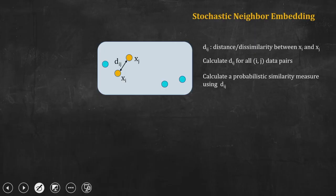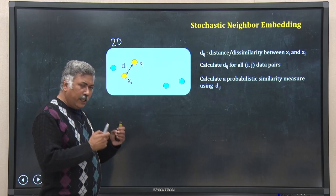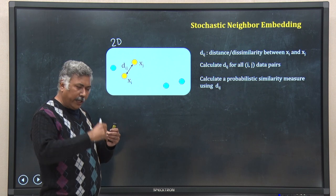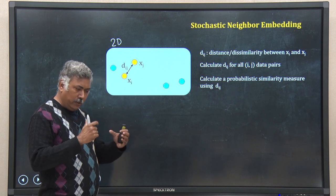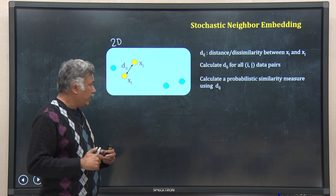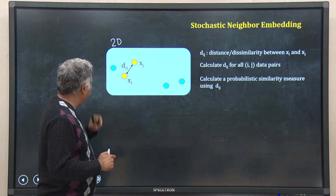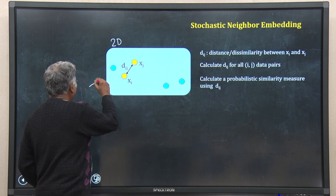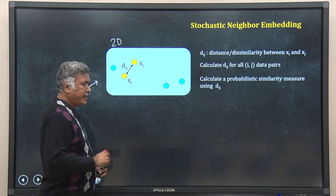In this two-dimensional data, suppose I have five data points as shown here. For each of these data points, you take another point — so you have a pair. For example, in the figure I have shown two yellow dots: one is x_i and another is x_j.